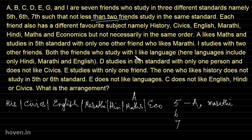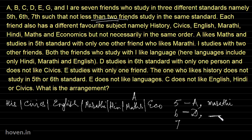There is another thing: the friends who are staying with I also like languages. There are two friends with I. If I and those two friends were in the same group, it would make five in one standard and then one each in the others, which is not possible. So I is either studying in sixth or seventh. D studies in sixth standard with only one person and doesn't like civics, so I'll put a cross on civics for D.